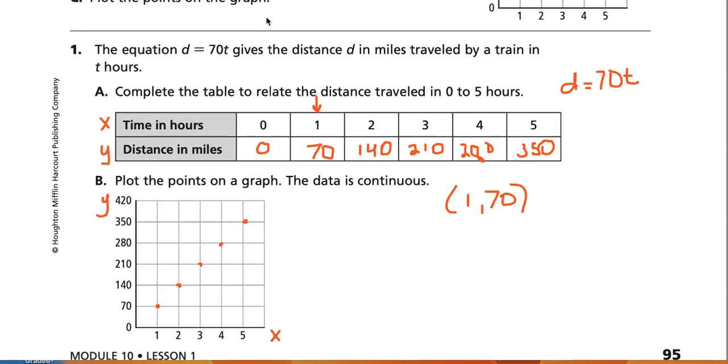And in this example, this is continuous, because I can drive a half an hour or a quarter of an hour. So I don't have a ruler, but this is my straight line and a continuous graph here.